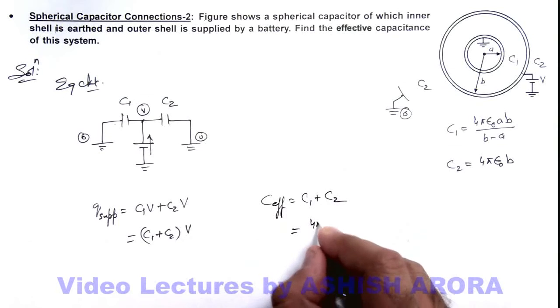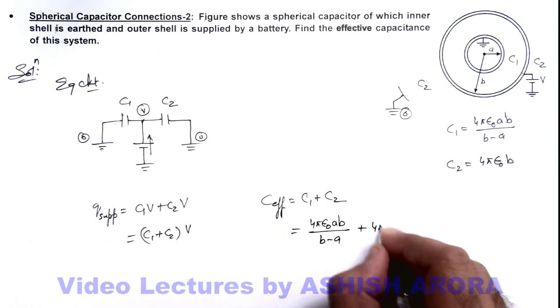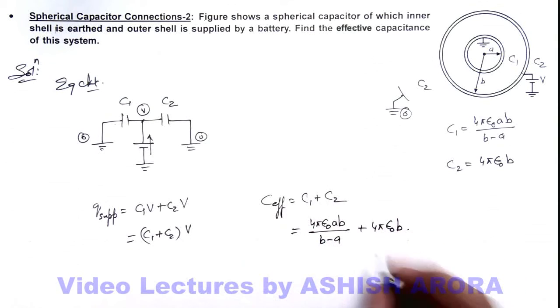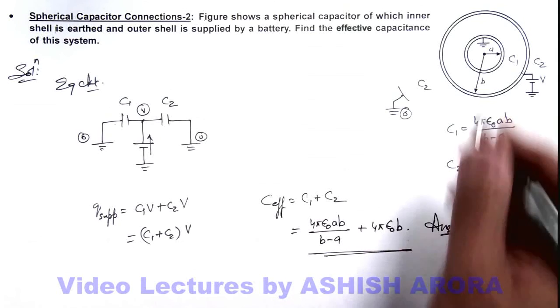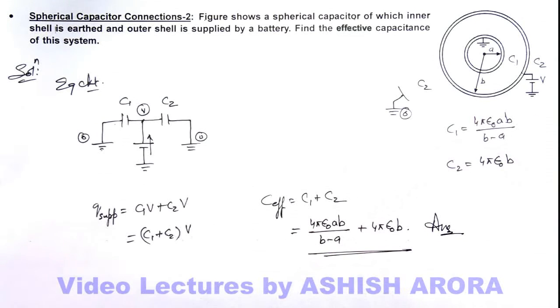So here the effective capacitance of this system can be written as c1 plus c2, which is 4πε₀ab/(b-a) plus 4πε₀b. That is the answer to this problem, the effective capacitance of this system of concentric shells.